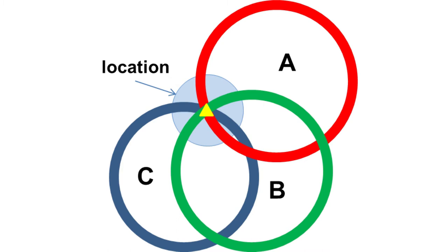The 3 satellites are A, B, and C. If you have satellite A, you can see it as a circle on a mobile device. Satellite B is also a circle. Satellite C is also a circle. These 3 circles intersect like a Venn diagram.